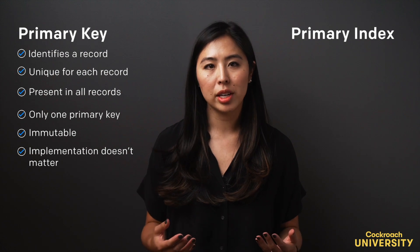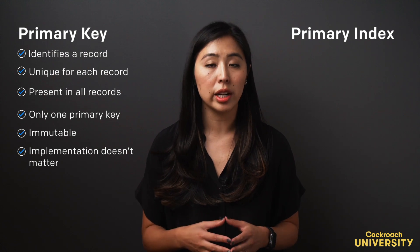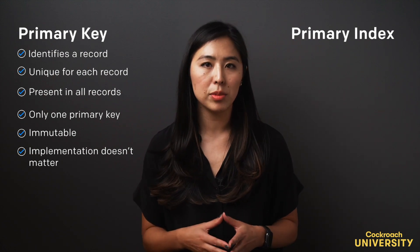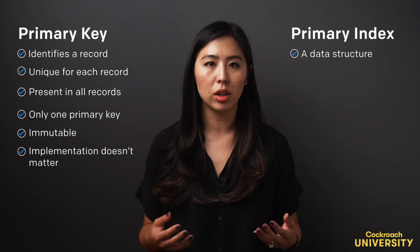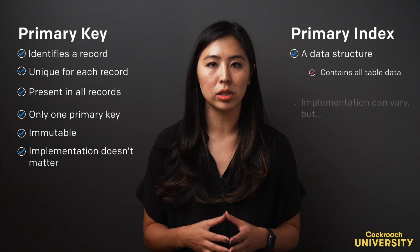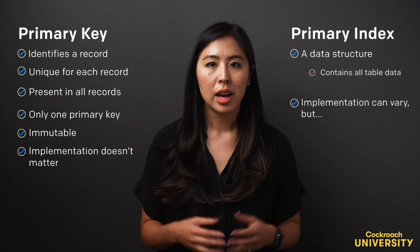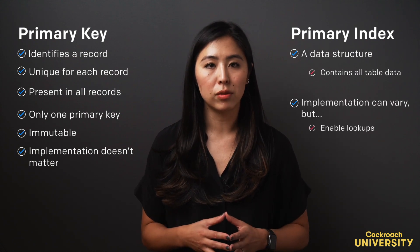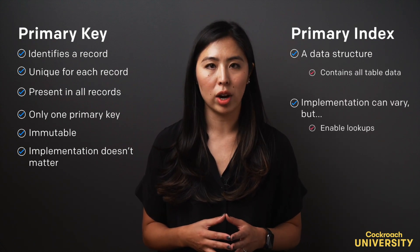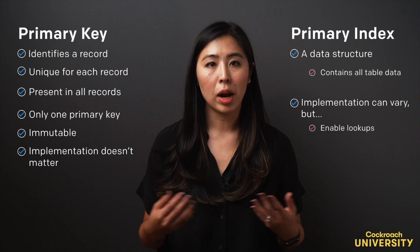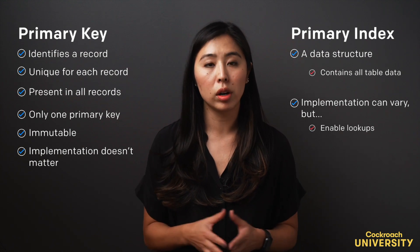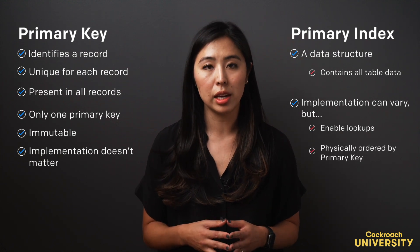The columns in a primary key are used to create its primary index, which CockroachDB uses by default to access the table's data. An index is a data structure that enables efficient lookups of records. The primary index is actually just the table ordered by the primary key.